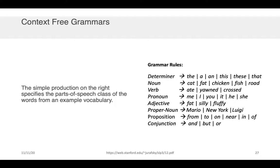So for example, a very simple production on the right specifies the parts of speech class of words from an example vocabulary. You can see here that these rules say, I'm going to consider anything that is in this list of words - cat, fish, chicken,